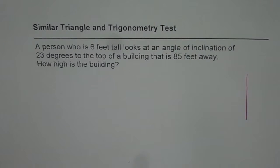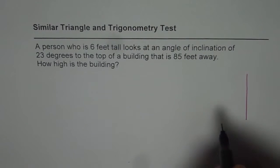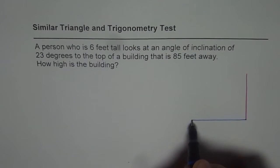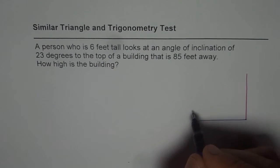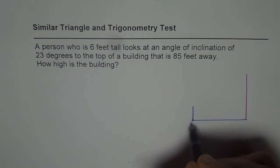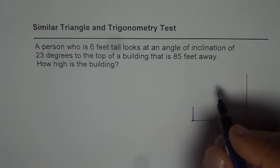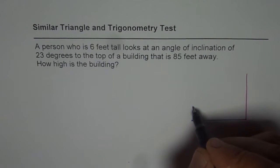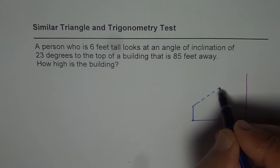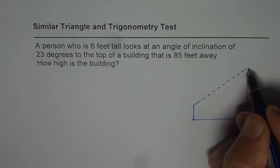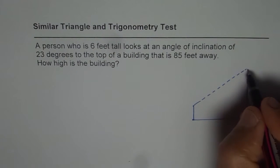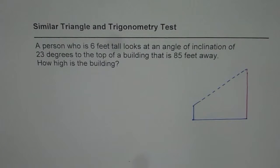So let us say that this is the building and the person is standing 85 feet away. The height of the person is 6 feet and when the person looks at it, let us say this is the angle at which is looking. Let me now increase the height of the building a bit to match my diagram.